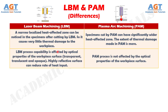Number 9: Laser Beam Machining process capability is affected by the optical properties of the workpiece surface — transparent, translucent, and opaque. Highly reflective surfaces can reduce the rate of heat input. Whereas Plasma Arc Machining process is not affected by the optical properties of the workpiece surface.